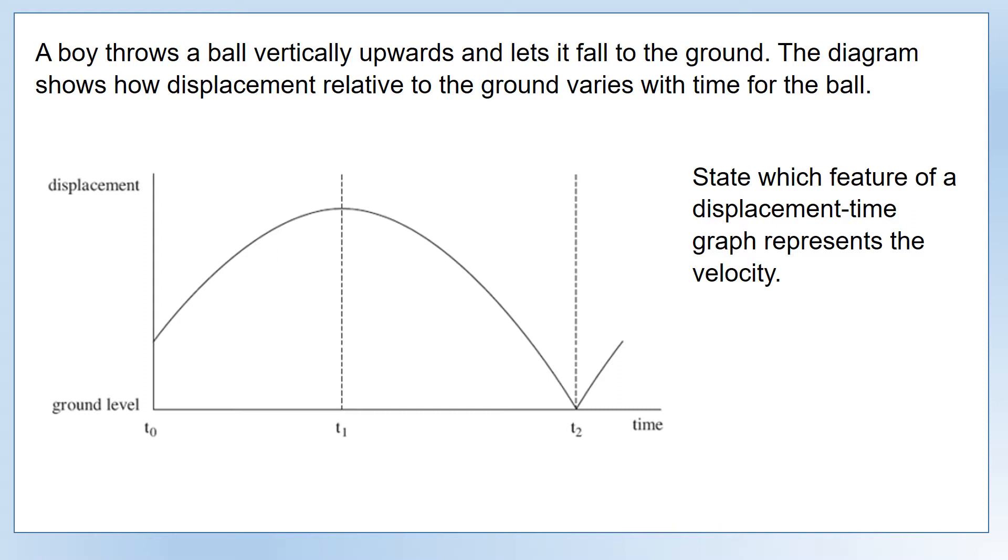State which feature of a displacement-time graph represents the velocity. This is just a fact you have to know: the gradient of this graph is the velocity of the object.